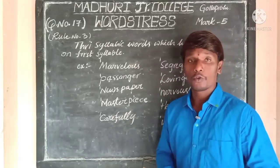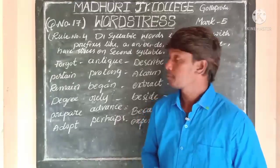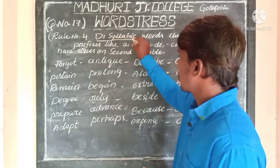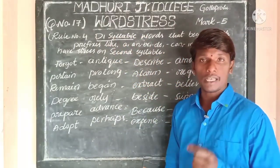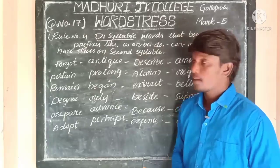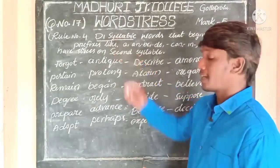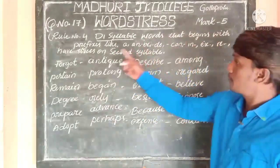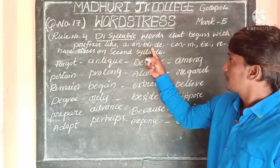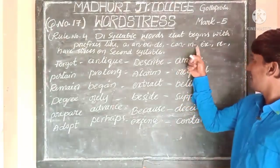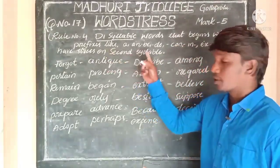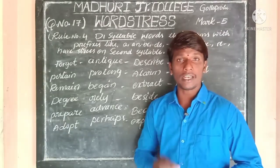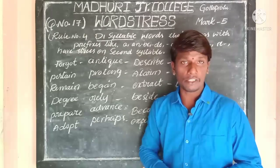Now let us talk about rule number 4. Rule number 4 talks about disyllabic words. Rule number 3 talks about trisyllabic words — all trisyllabic words have stress on their first syllable. Rule number 4 talks about disyllabic words that begin with prefixes like A, AN, B, D, CON, IN, X, RE — these have stress on their second syllable. Yesterday we talked about disyllabic words having stress on their first syllable.